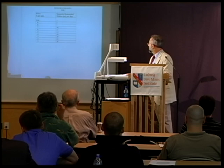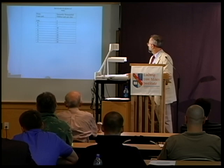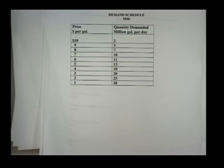A demand schedule is a table that indicates the quantity demanded of a good at different prices — just an illustration of the law of demand. We never actually see a demand curve in the real world; the only thing we see is one point on a demand curve, because all we observe is a certain quantity exchanged for a given price.